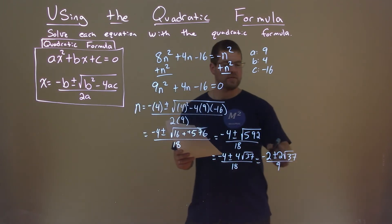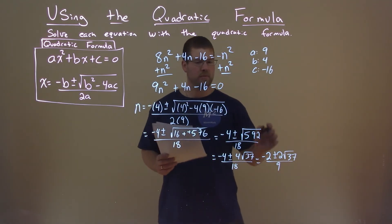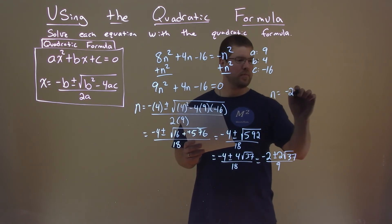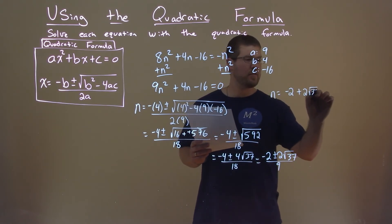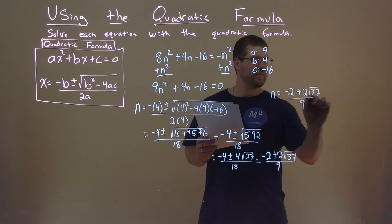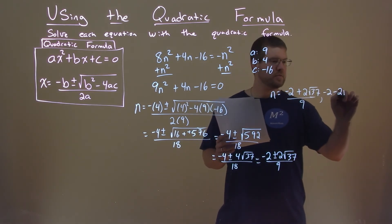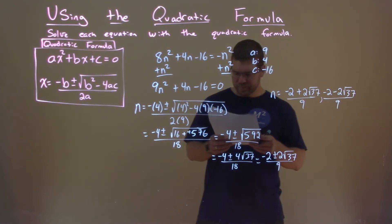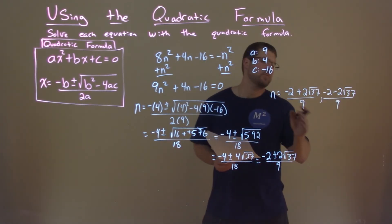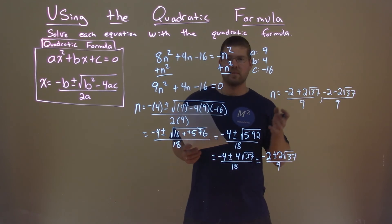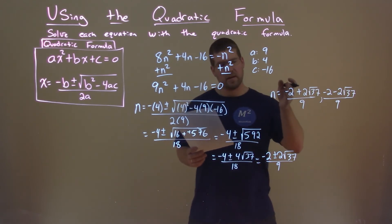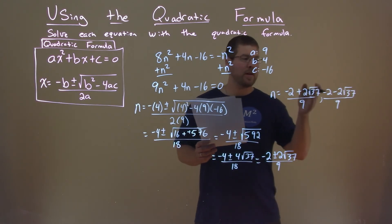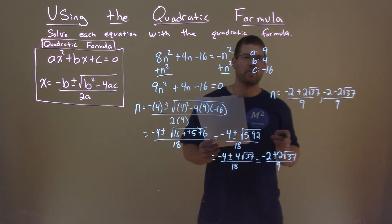Now we have this number with plus or minus, so let's separate that out. We have negative 2 plus 2 square root of 37, over 9; and negative 2 minus 2 square root of 37, over 9. We actually can't simplify this anymore, so this is our final answer: n equals negative 2 plus 2 square root of 37, over 9; and negative 2 minus 2 square root of 37, over 9.